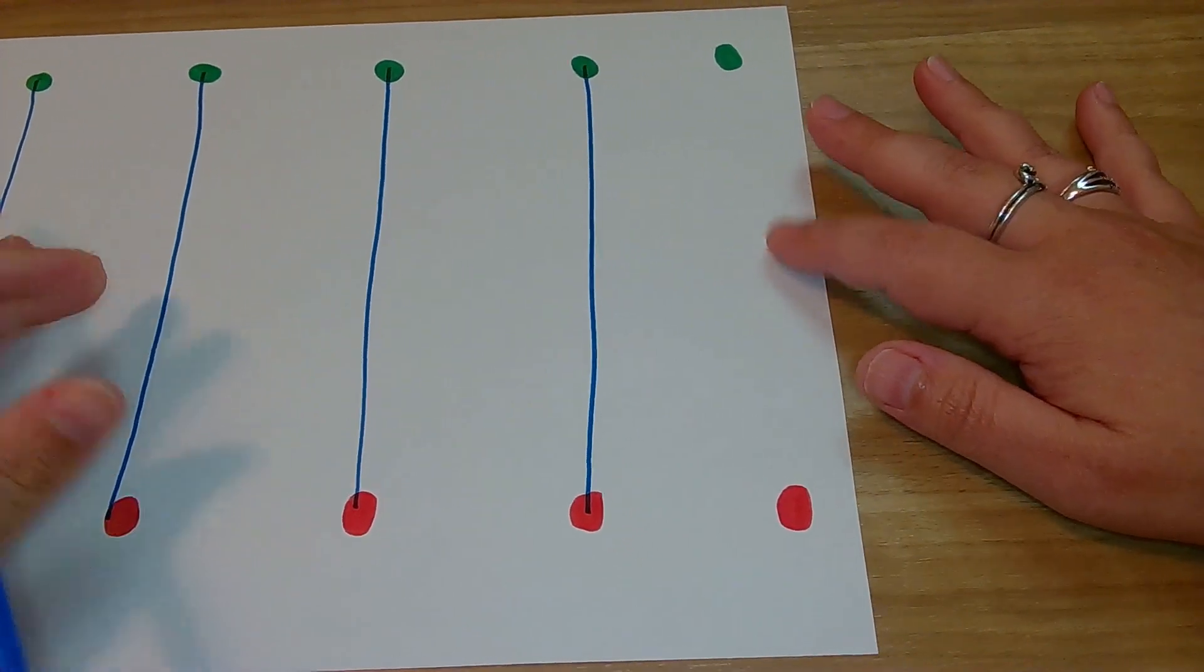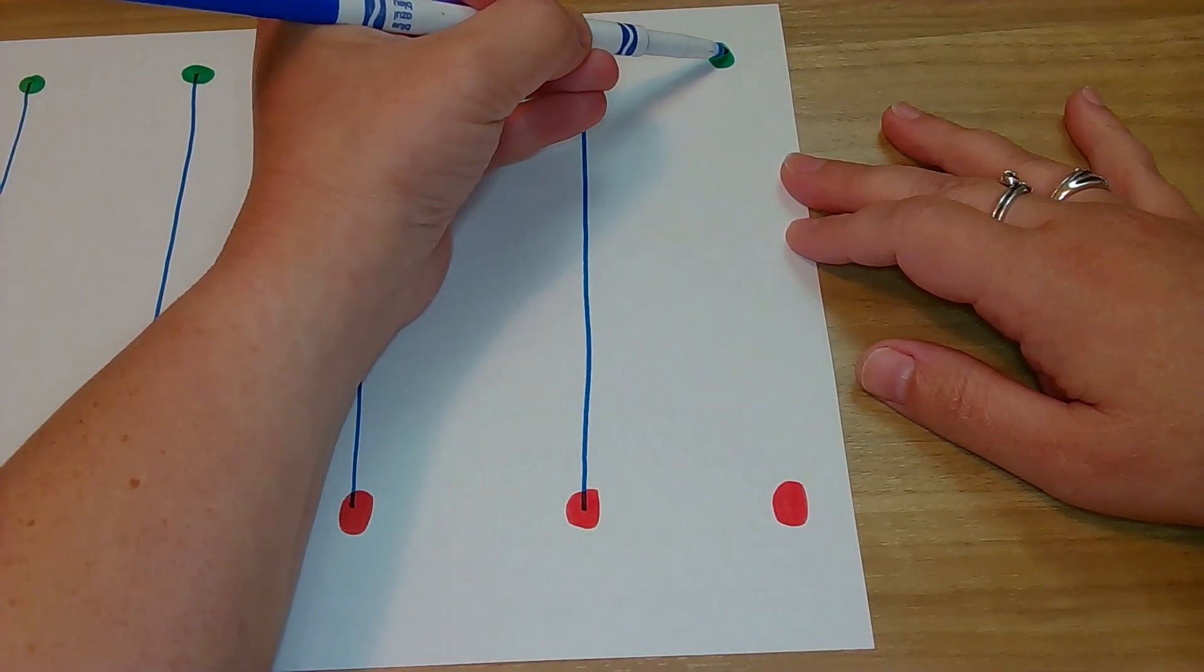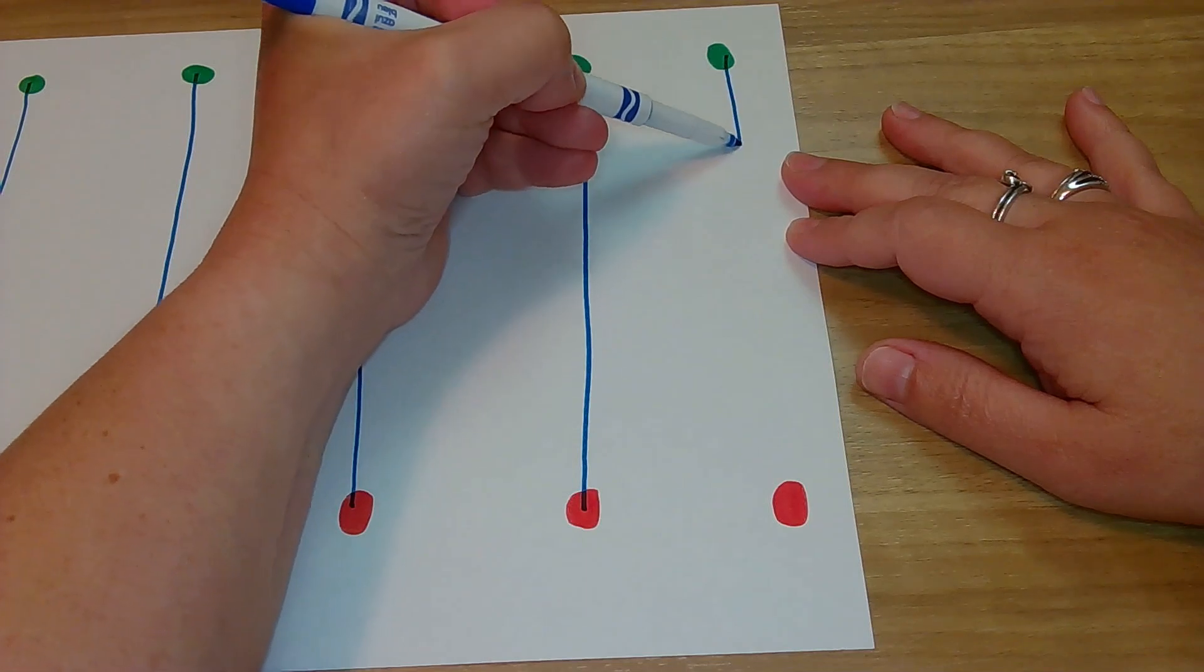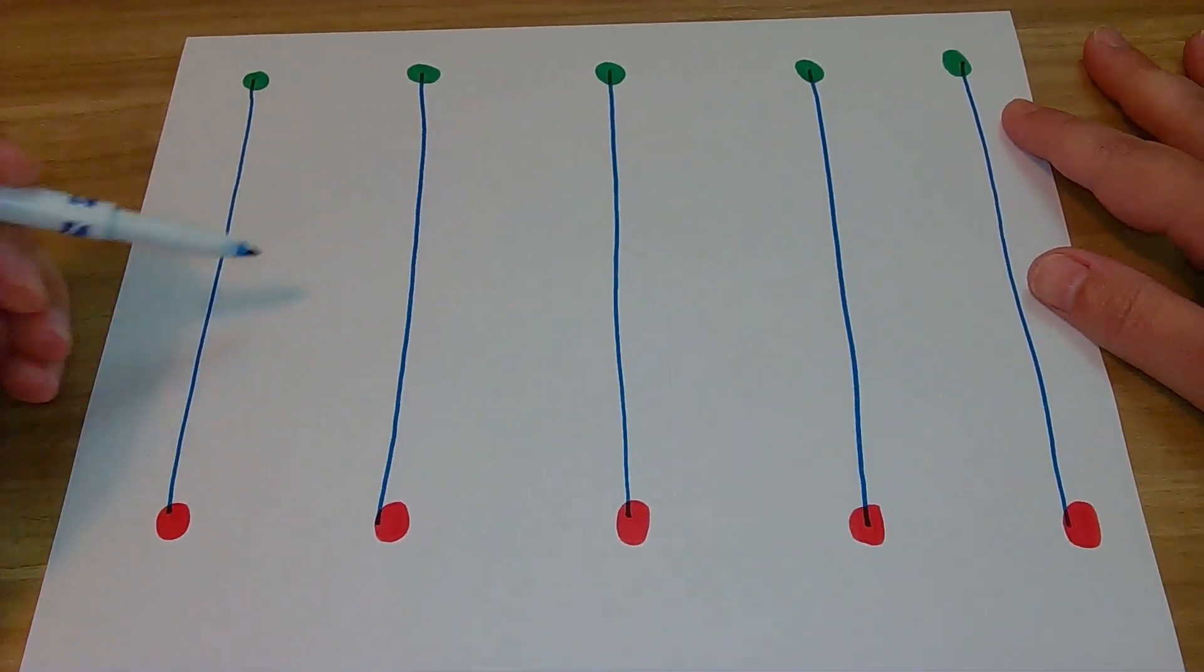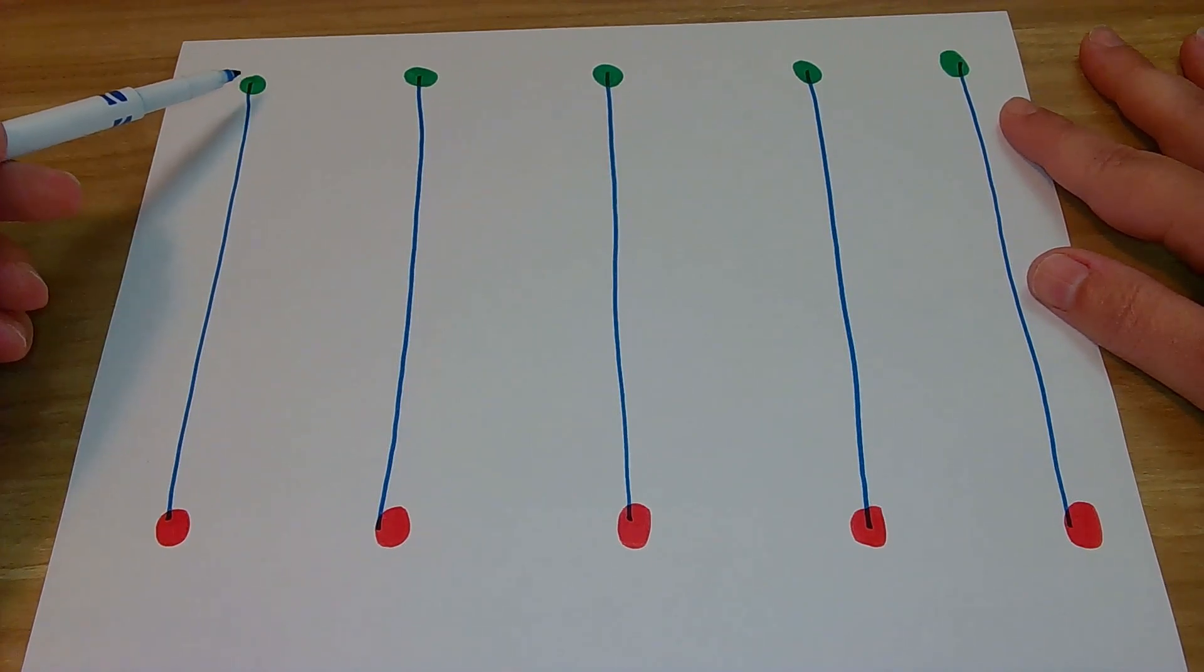Okay, we have one more. Here we go. On green dot. Go. Big line down. Yes. Oh my goodness, look. We did it. We started on the top. We ended at the bottom and we did not go past our red dots. Fabulous job.